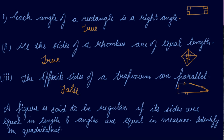A figure is said to be regular if its sides are equal in length and angles are equal in measure. Identify the quadrilateral: all the sides are equal, and all angles are 90 degrees each. So this figure is a square — it is a regular quadrilateral. I hope you have understood this.